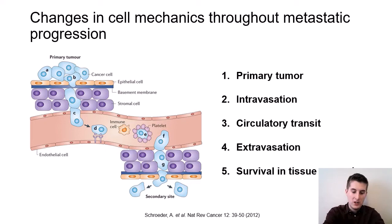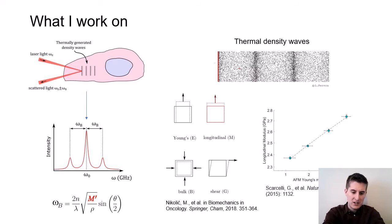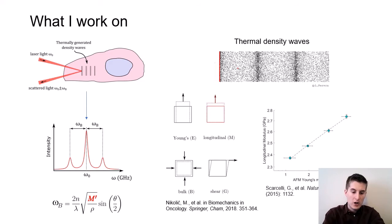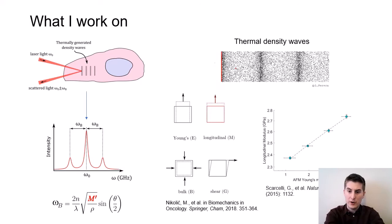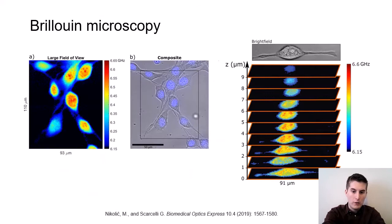To measure live cells without perturbing them, I use an all-optical, label-free, non-invasive technique called Brillouin microscopy. To measure mechanics, we take advantage of the Brillouin scattering process — it's a phenomenon of light scattering from thermal density fluctuations. These density fluctuations are determined by the material properties, and so we can use the spectroscopic information to get a map of mechanical properties by doing a high precision spectroscopy measurement.